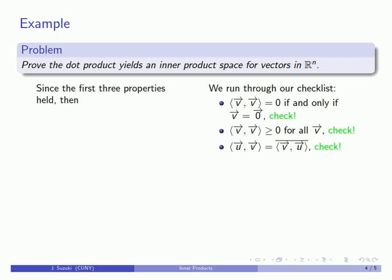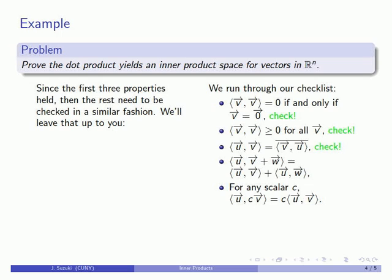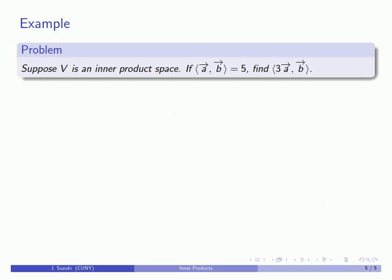Since the first three properties held, the rest need to be checked in a similar fashion — we'll leave that up to you. Remember: trust, but verify. One useful thing is that once we know that we have an inner product space, then given even a single inner product, we can find a large number of inner products, including all linear combinations of the vectors in the inner product. Let's see how that might work.